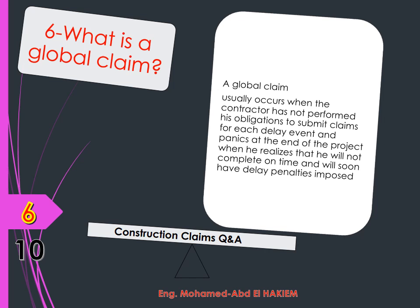Question 6: What is a global claim? Answer: A global claim usually occurs when the contractor has not performed his obligations to submit claims for each delay event, and will not complete on time with delay penalties looming. Basically, in this situation, the contractor cites all delay events that have occurred and attempts to claim an extension of time to the completion date that he achieved.